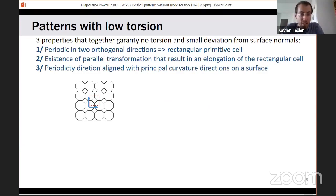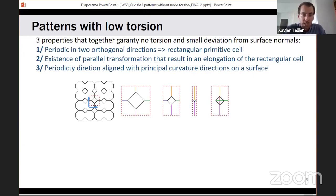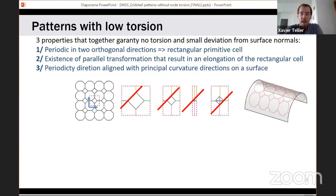The first condition is that the pattern should be periodic in two orthogonal directions, so there is a rectangular primitive cell that you can copy and translate to recreate the entire mesh. Second condition: there should be a parallel transformation that allows an elongation of this rectangle. What I mean by parallel transformation is a transformation that modifies the length of each beam but that does not change their orientation. So if we follow this line as we're applying the transformation, it always keeps the same orientation. And last rule, this primitive rectangle should be always aligned with principal curvature directions on the surface.